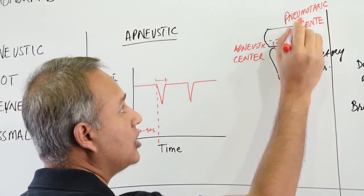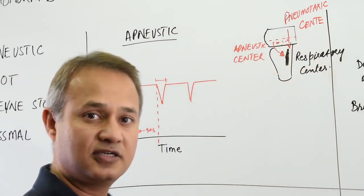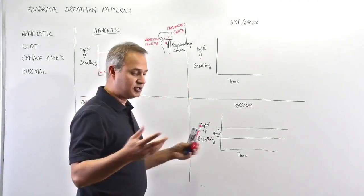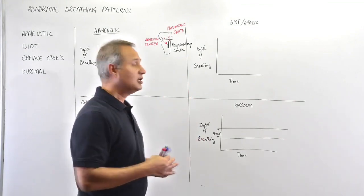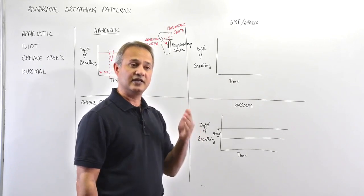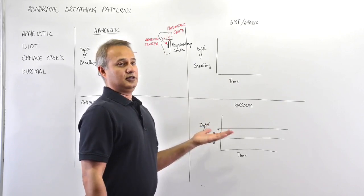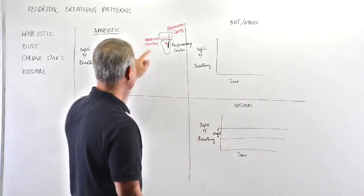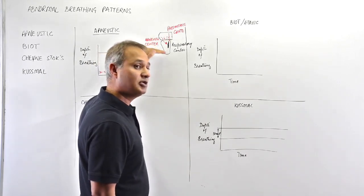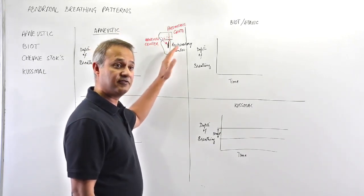Inspiration would be stopped by the pneumotoxic center. The apneustic center overrides the switch-off of inspiration, so it prolongs inspiration. For example, if you decided to take a long deep breath, your apneustic center tells the medulla not to listen to the pneumotoxic center. When there is caudal medulla damage, this center can become irritated and active, causing this kind of apneustic breathing.